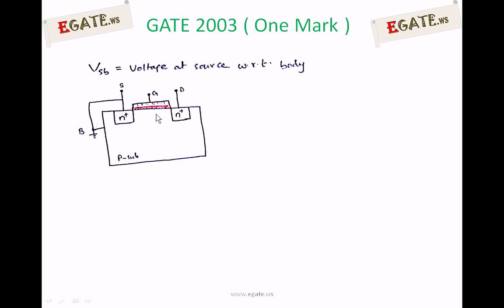We must create an N-channel in this region, that is also called the inversion region. For that, we must apply positive voltage. Minimum positive voltage required to create the channel is called threshold voltage.